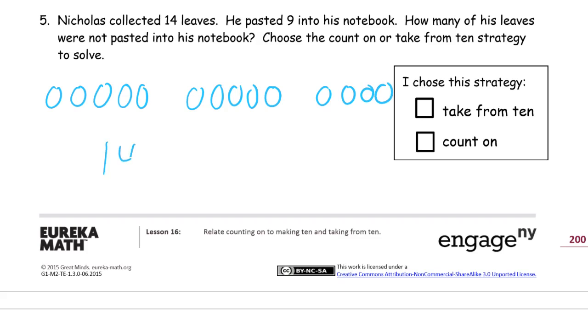All right, this is really 14 minus 9, right? So you're going to take, 14 and 9 are not all that close together, really. So this is really a take from 10. I'm thinking 4 plus 1 more is 5, so 14 minus 9 is 5. And these are the leaves that were in his notebook, and these are pasted, and these are the ones that are not.